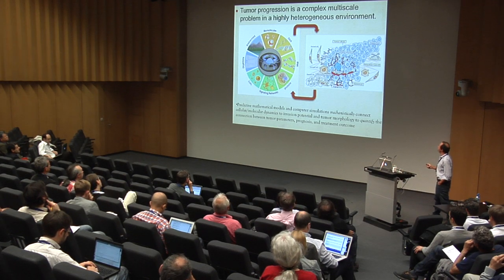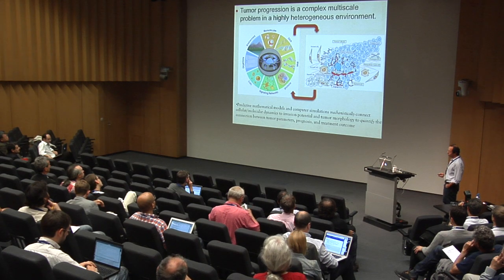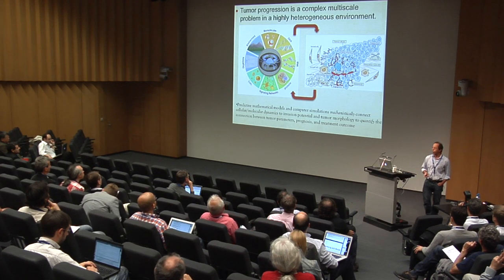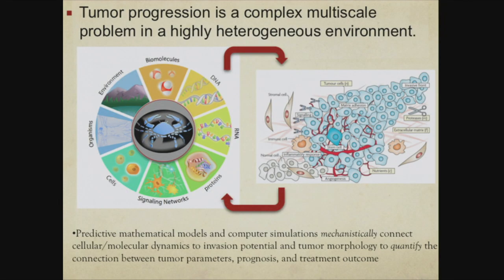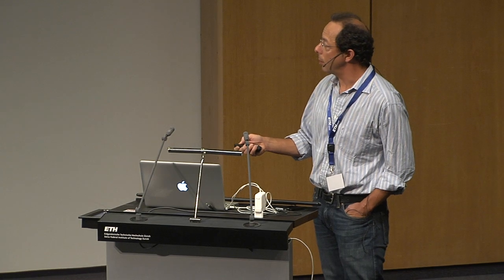Tumor modeling and progression is a complex multi-scale problem. The real challenge is how to model the interaction of all the different scales, ranging from the sub-cell scale of molecules, DNA and RNA, how they form proteins, how the proteins interact, how they tell the cells what to do, how the cells interact with the environment, and the processes on the microscale and the tumor microenvironment. If one can develop predictive models, you can mechanistically connect the sub-cellular dynamics to the invasion potential, the tumor morphology, and essentially understand how tumors will progress and respond to treatment.